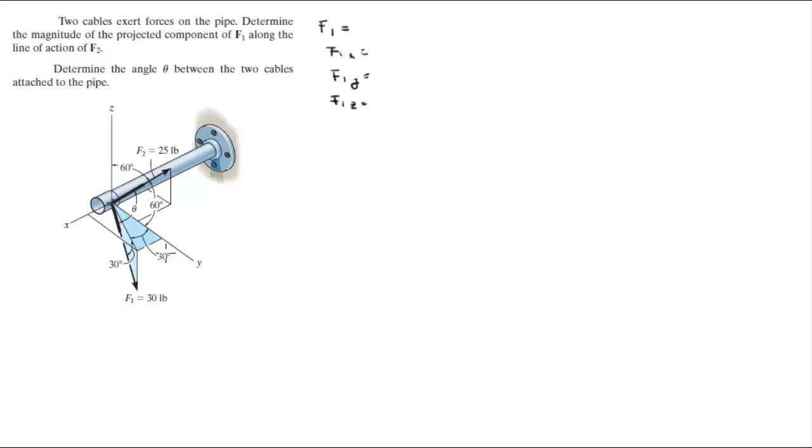Now, the Z component is very easy to find, it's this component right here. You can find it by doing F1, which is given, times sine of 30, which comes out to be negative 15 because it's going down on the negative Z axis.